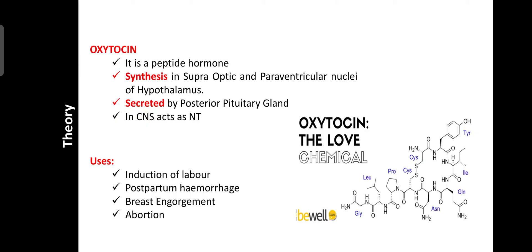Oxytocin is a peptide hormone. It is synthesized in the supraoptic and paraventricular nuclei of the hypothalamus and secreted by the posterior part of the pituitary gland. In the CNS, oxytocin acts as a neurotransmitter and is involved in the transmission of information from one neuron to another. In other parts of the body, it mainly causes contractions of the uterine smooth muscles. Due to these contractions, oxytocin is used in the induction of labor, treatment of postpartum hemorrhage, treatment of breast engorgement, and it can induce abortion if the parents do not need an infant.